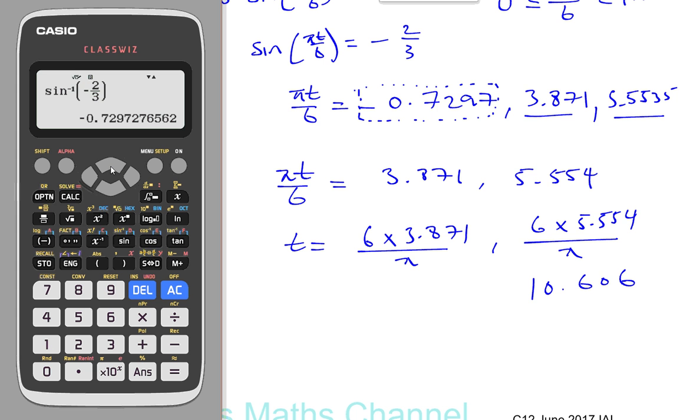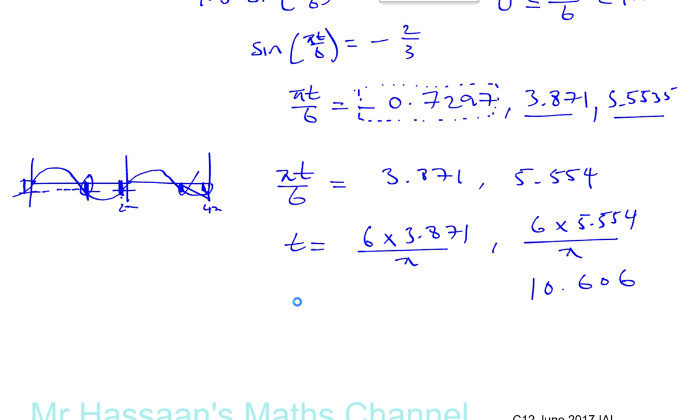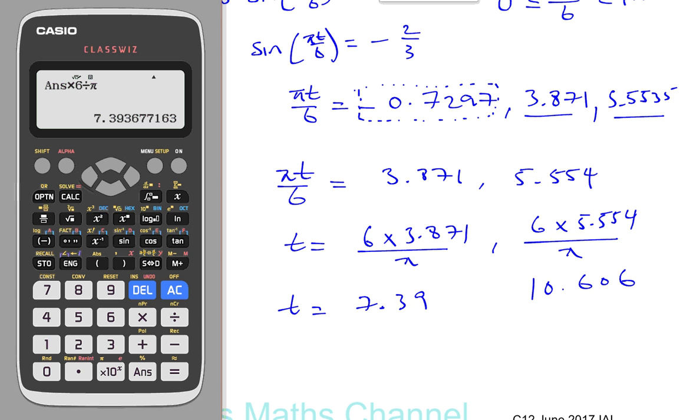Pi minus that answer times 6 divided by pi gives us 7.393. So t is equal to 7.394.